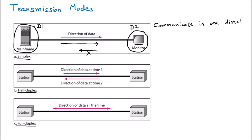In simplex, they can communicate in one direction only. There are various real-life examples, like a one-way street where you can only go one way with no option of coming back. Another very good example is the TV remote — the remote sends the signal to the TV, but the TV never sends a signal back to the remote. That is one-way communication.